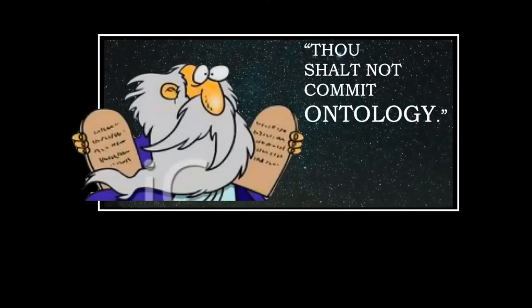One of the big ideas of Roy that really attracted me is his critique of modern philosophy and its commandment: 'thou shalt not commit ontology.' Modern philosophers were allergic to talking about reality. What happened in modern philosophy is that there was a detour to epistemology. Whereas the pre-moderns — the ancients and medievals — were comfortable talking about metaphysics, modern philosophers beginning with Descartes said, 'let's just stick to epistemology.' So there was an obsession with epistemology and an allergy to ontology.